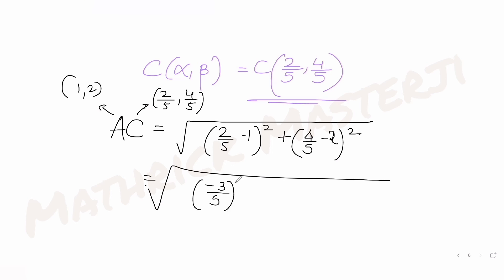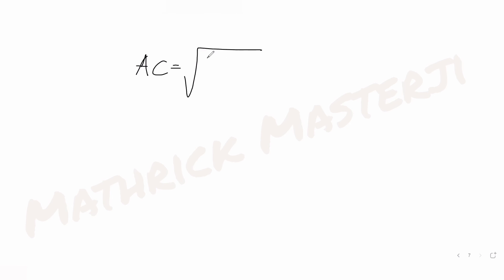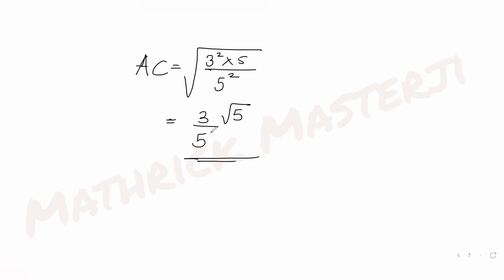Computing: 2/5 − 1 = −3/5 and 4/5 − 2 = −6/5. So AC = √[(−3/5)² + (−6/5)²] = √[(9 + 36)/25] = √(45/25). Writing 45 = 3²·5: AC = √(9·5/25) = 3√5/5. So the distance AC is 3√5/5.